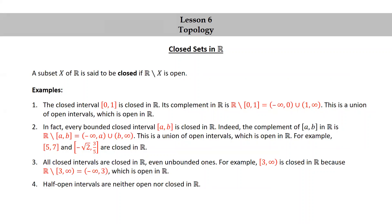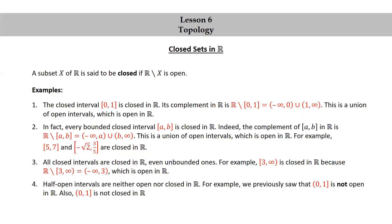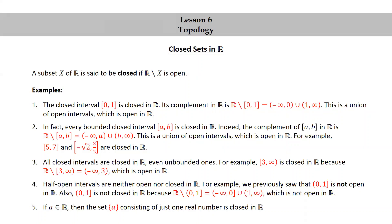Half-open intervals are neither open nor closed in R. For example, we previously saw that the half-open interval (0,1] is not open in R. Also, the half-open interval (0,1] is not closed in R because R minus (0,1] equals (-∞, 0) union (1, ∞), which is not open in R. If A is in R, then the set containing just A — a single real number — is closed in R.